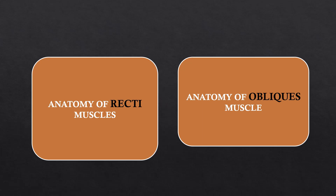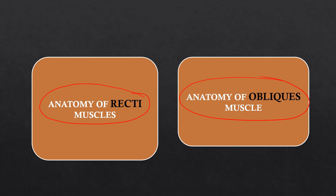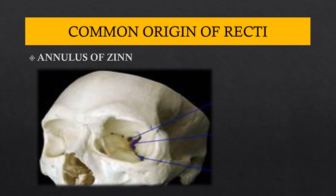The four recti — superior, medial, lateral, and inferior — have a common origin from the posterior aspect of the orbit, called the annulus of Zinn. In the skull, the hole through which the optic nerve passes is the optic canal. Just lateral to the optic canal is the superior orbital fissure, and below that is the inferior orbital fissure. These three structures are essential to understanding the annulus of Zinn.